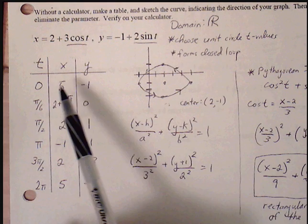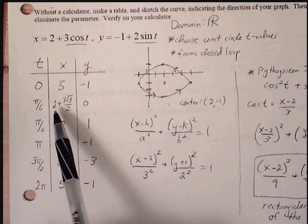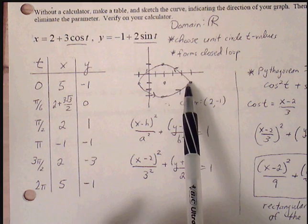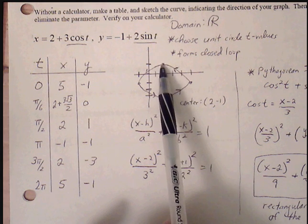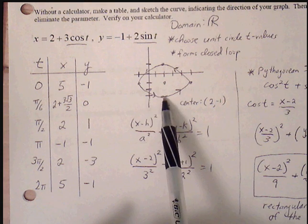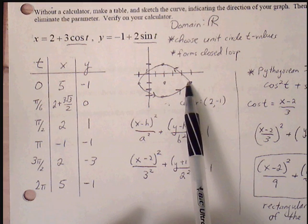And if I choose 0, we get 5 and negative 1. And pi over 6, we get 2 plus 3 root 3 over 2 and 0. For pi over 2, we get 2, 1. For pi, we get negative 1, negative 1. For 3 pi over 2, we get 2, negative 3. And for 2 pi, we go back to our origin point, 5, negative 1.